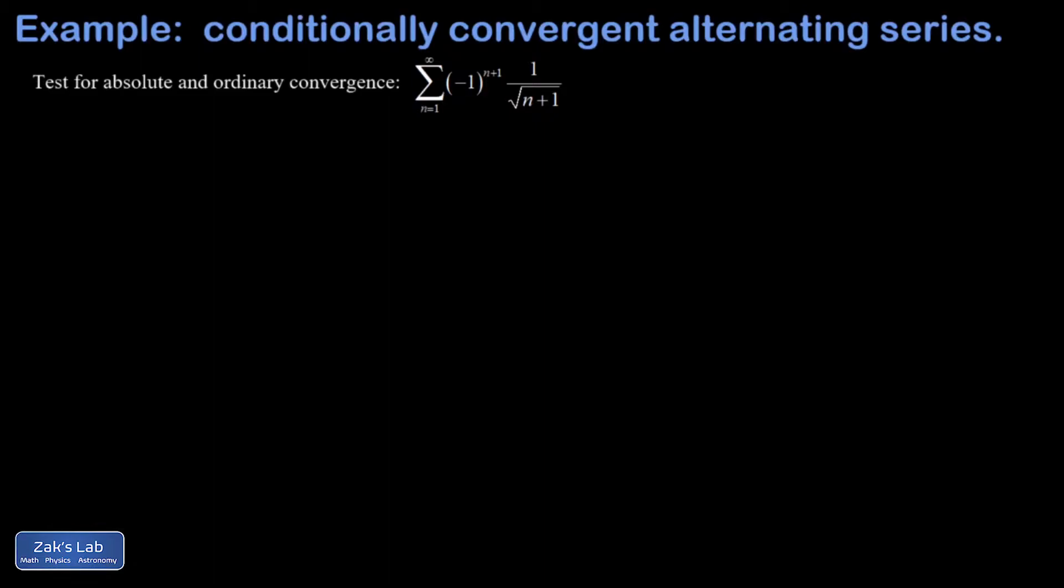So absolute convergence just means test the convergence of the absolute values. And I'm quite certain this actually diverges, because it looks like in the large n limit, this is becoming basically 1 over root n.